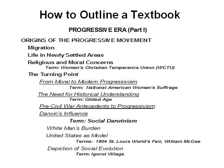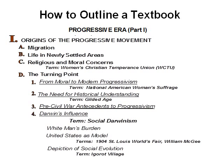Here is how traditional outlining works. Roman numerals denote major chapter divisions. Capital letters denote the major supporting points in each chapter division. Each supporting point may have sub-points of its own, indicated by numbers. And even one of those sub-points may be more finely divided, indicated by small case letters. That's the short-course introduction to traditional outlining.